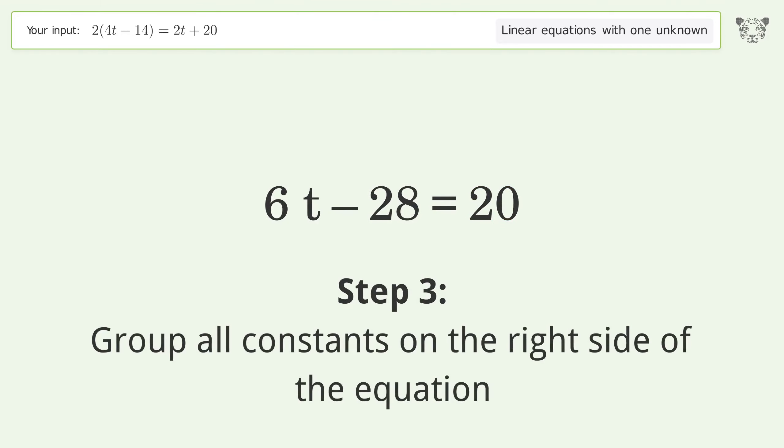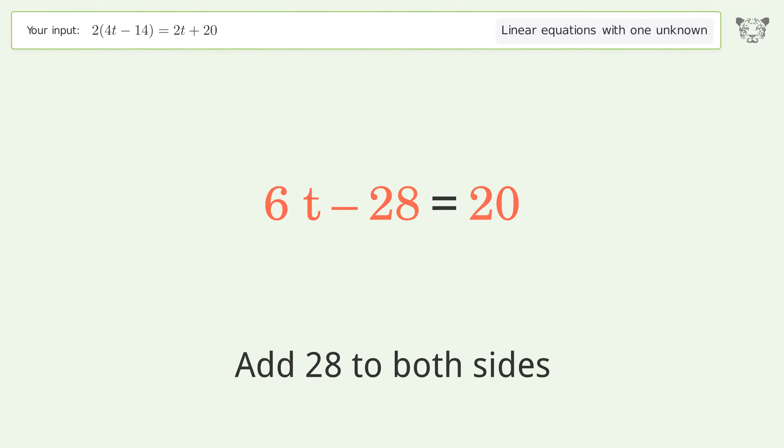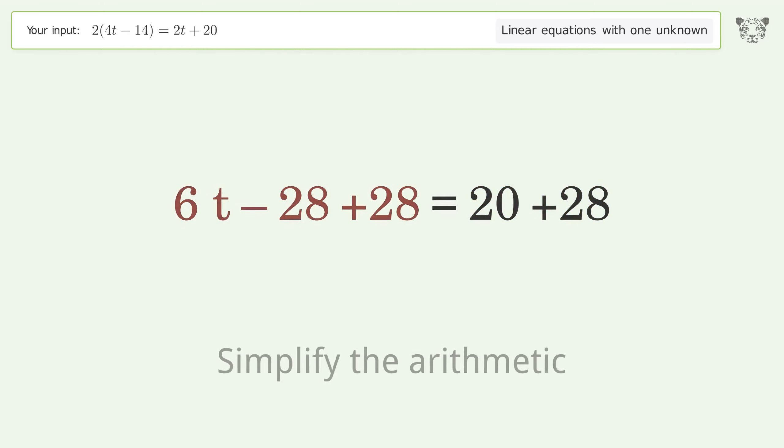Group all constants on the right side of the equation. Add 28 to both sides. Simplify the arithmetic.